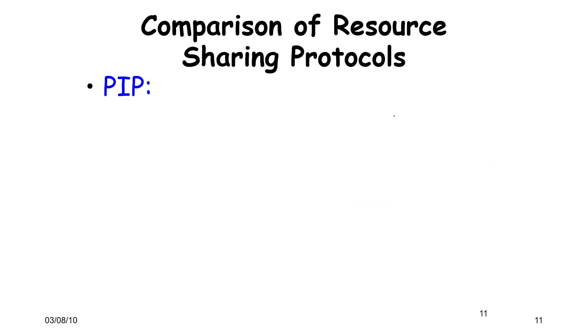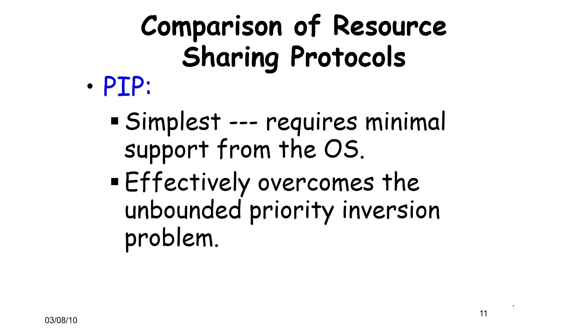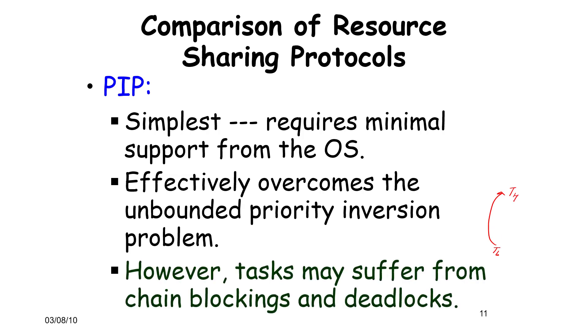If we compare the resource sharing protocols, this is what we find. For PIP, the simplest protocol requires minimal support from the OS. Unbounded priority inversion is something that it overcomes because it raises the priority of TL to TH. That's pretty much the only real problem that it overcomes. However, chain blocking and deadlocks are possible, which is why we have the next protocol, which is HLP.